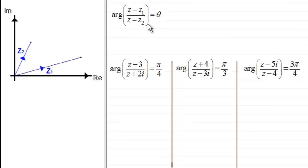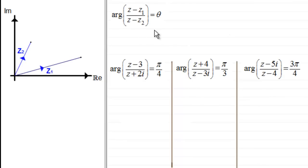Where z1 and z2 represent the complex numbers of two fixed points on an Argand diagram. Towards the end we'll have a go at three questions — I'd strongly encourage you to try them, as they show up different ideas on this equation. But first we need to work out what the locus for z would be that satisfies this equation.